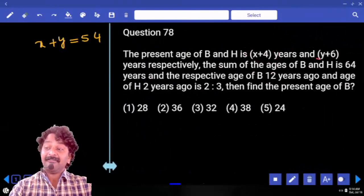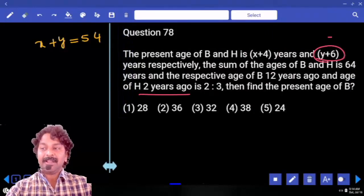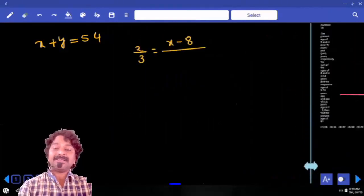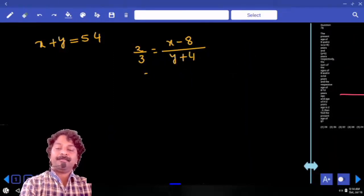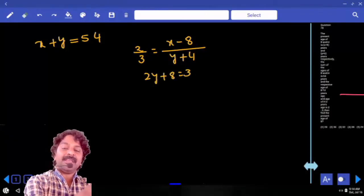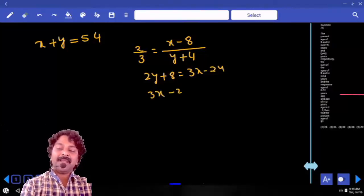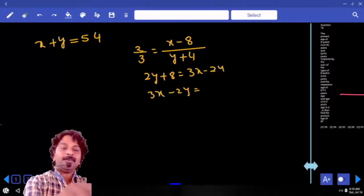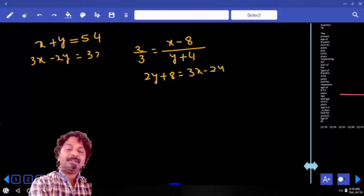H present age is y plus 6. For H we have to take 2 years ago, that means minus 2, which is y plus 4. So 2y plus 8 is equal to 3x minus 24. From this we can write 3x minus 2y is equal to 32. 3x minus 2y is equal to 32.